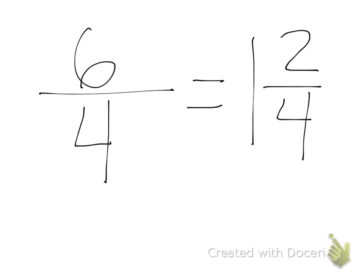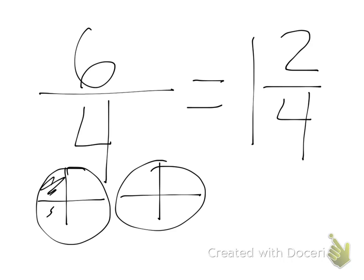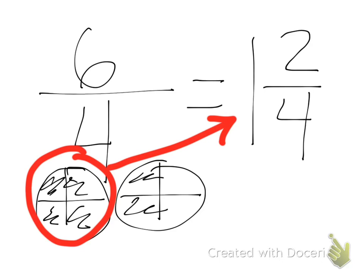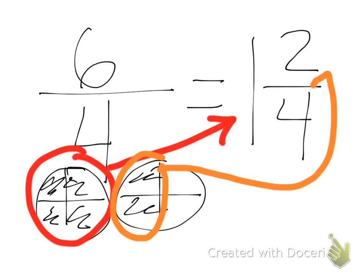If I drew it out, it would look like this. 1, 2, 3, 4, 5, 6. So here is my one whole. And here are my 2 left over. Out of the 4.